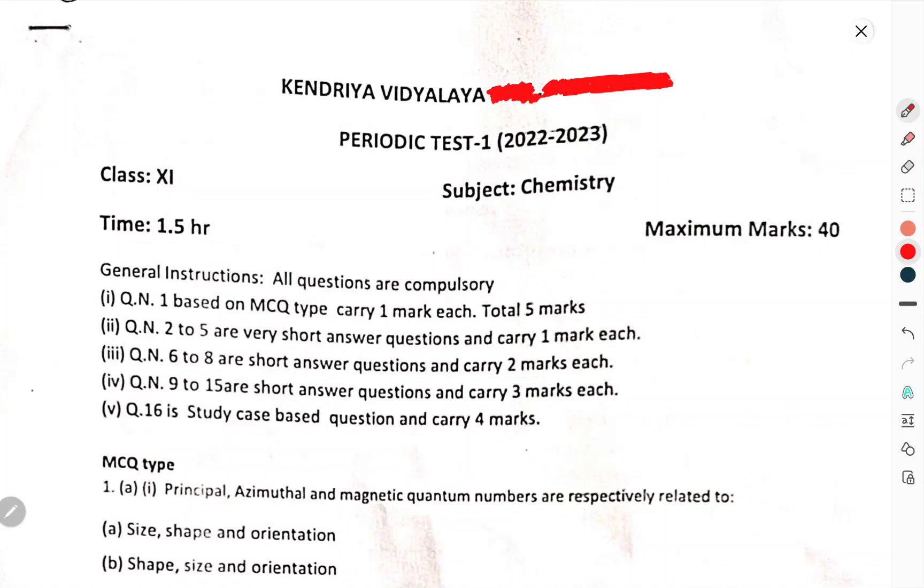Today we will discuss the periodic test 1, 2022-23, subject Chemistry, Class 11th. Time is 1.5 hours, maximum marks is 40. So let us start now.